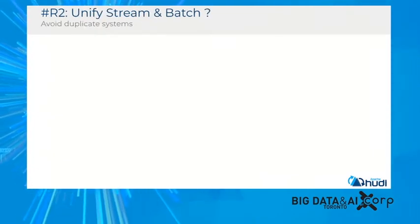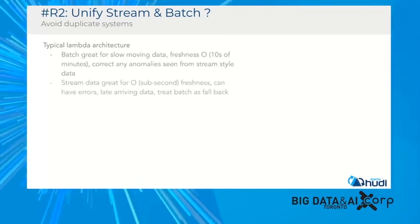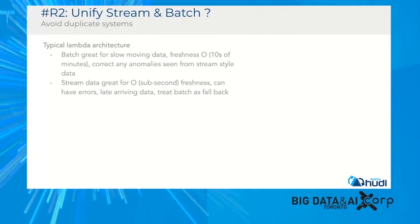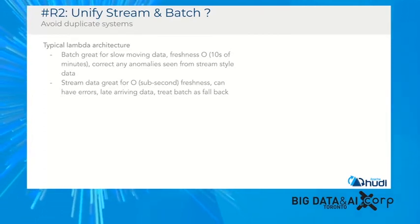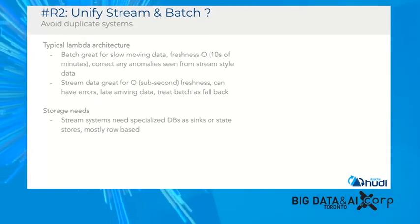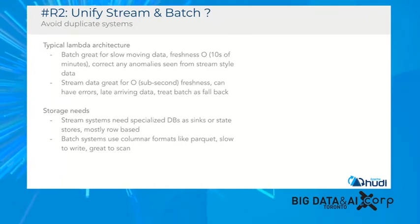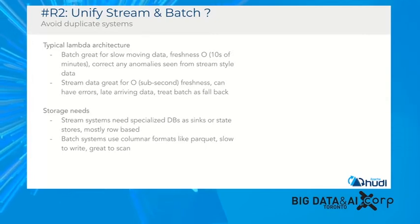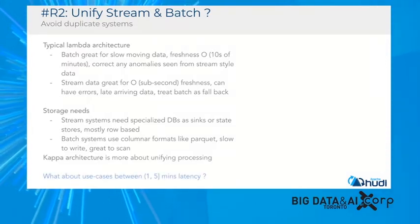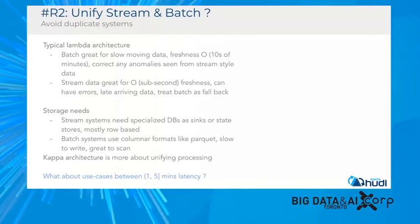There's a perennial question of how to unify stream and batch. In typical Lambda architecture, batch is great for slow-moving data with freshness on the order of tens of minutes and can correct anomalies from streaming. Stream data is great for sub-second latencies but can have errors and late-arriving data. Storage for stream processing typically needs specialized DBs or state stores and is mostly row-based, whereas batch is preferred for writing columnar data like Parquet — slow to write, but great for scanning. The Kappa architecture talks about unifying processing, but what about storage use cases where you care about one-to-five-minute data latency?